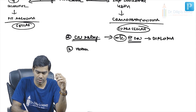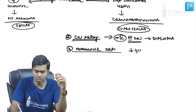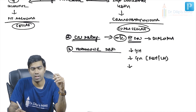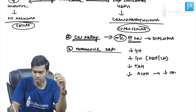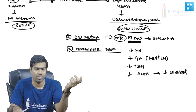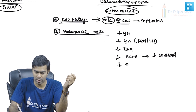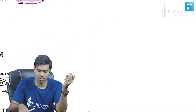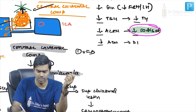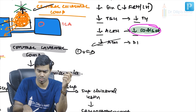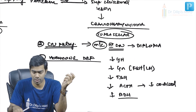The enlarging pituitary lesion can also compress the normally functioning pituitary, causing hormone deficiencies: low growth hormone, low FSH and LH leading to amenorrhea, low TSH, low ACTH causing low cortisol and secondary adrenal insufficiency. Low ADH can also occur, causing diabetes insipidus, though this typically involves the posterior pituitary.